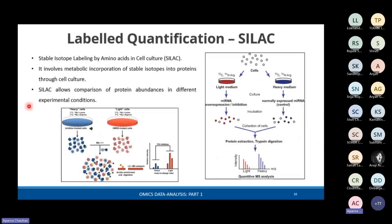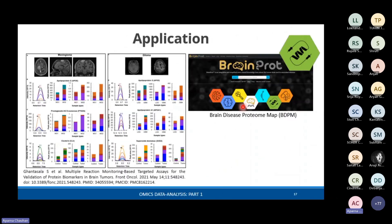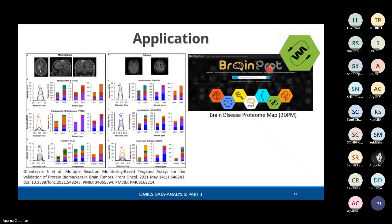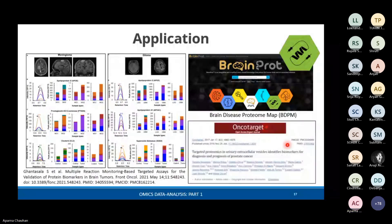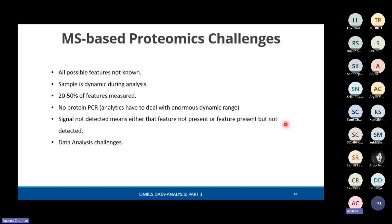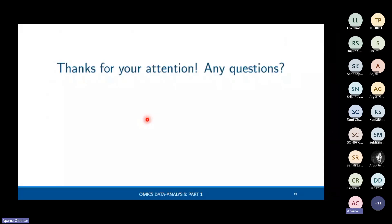A little bit about the application — as Richard had already talked about in the previous talk, we can use different targeted methods for biomarker discovery. One portal developed by our lab, BrainTrot, has a segment called Brain Disease Proteome Map giving results of various MS-based protein studies. I have provided some study materials in the TribeLink, especially a paper on targeted proteomics, which has potential for clinical translation. These are some of the challenges — we will be focusing on data analysis challenges in the hands-on session. Thank you for your attention.